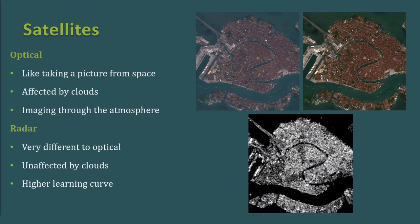Radar is actually very different from optical imagery because it behaves completely differently. It sends its own signal, receives it back, and then looks at the difference. Radar is unaffected by clouds because it uses a completely different wavelength to optical imaging, and as such it is much more difficult to master — it requires a much higher learning curve. Another benefit is that it is active, generating its own light, unlike optical which requires sunlight, so it can image day and night.